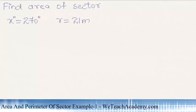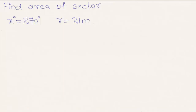Welcome to Ateachacademy.com. In this presentation we are going to discuss an example on sector. The given example is to find the area of a sector when the angle is equal to 270 degrees and the radius is equal to 21 meters.